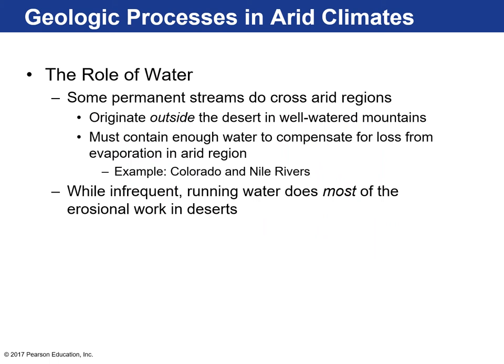There are some permanent streams in desert regions, but they're more special cases. A lot of times the water originates outside the desert region and just happens to run through those latitudes — from mountains outside those latitudes at really high elevations where there is more precipitation. The river must produce enough water to compensate for the loss as it runs through the arid region. The best examples are the Colorado and the Nile rivers. While infrequent, running water across the surface of a desert does most of the erosional work.